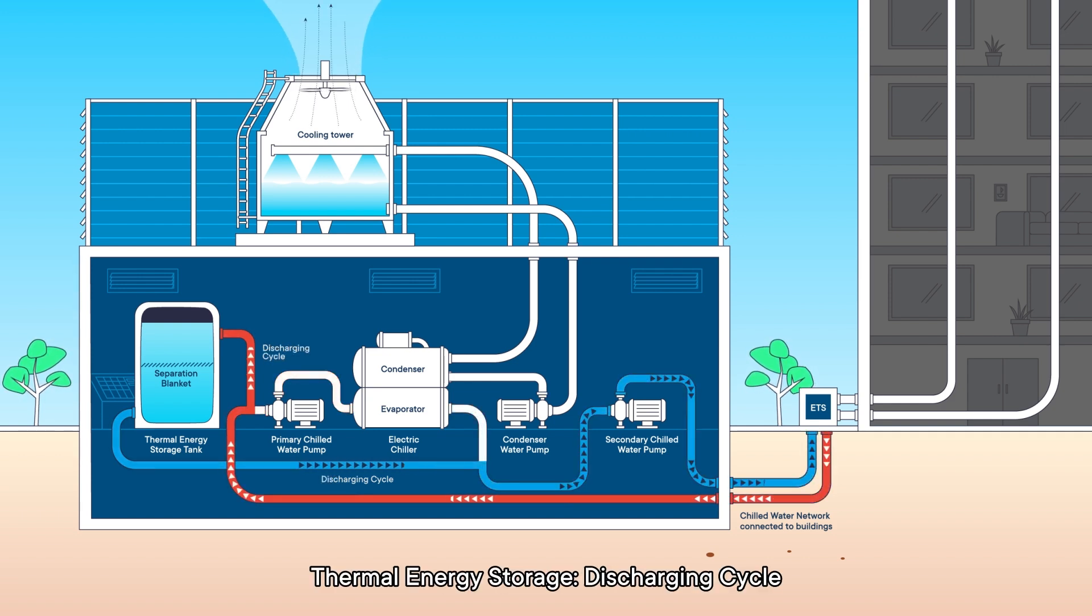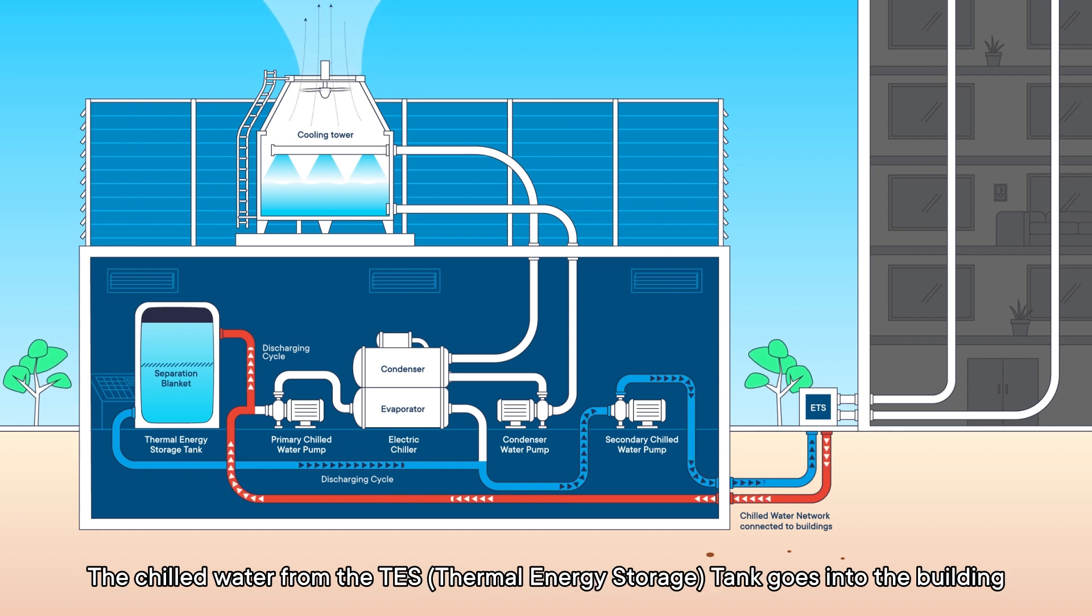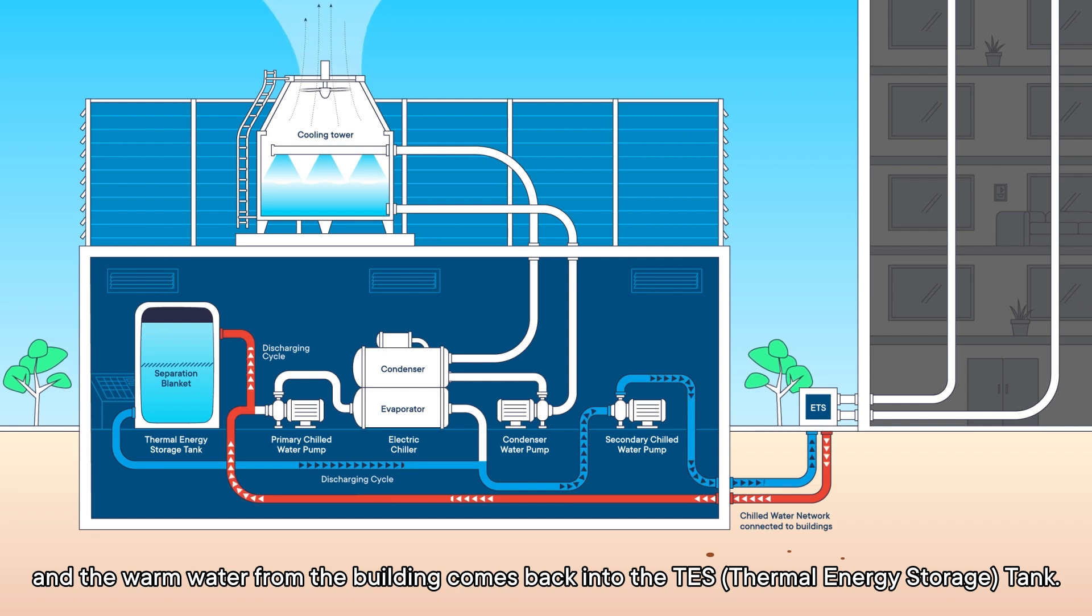Thermal energy storage discharging cycle: This happens during the day when there are peak surcharges on the electricity tariffs. The chilled water from the TES tank goes into the building and the warm water from the building comes back into the TES tank.